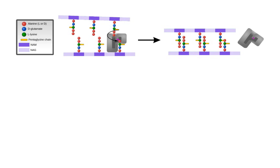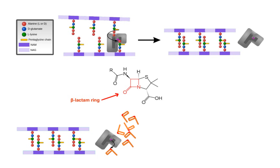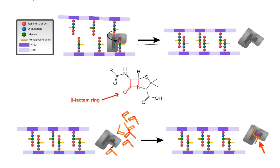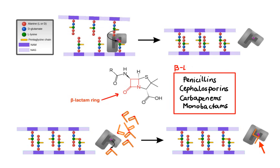In order for bacteria to grow and divide, a new cell wall must be continuously built. Most antibiotics in this group are characterized by a beta-lactam ring at the core of their structure, which resembles the substrate for penicillin-binding proteins. When a penicillin-binding protein binds to the beta-lactam ring, a covalent bond is formed, resulting in a permanently blocked active site. This makes the enzyme unable to perform its role in cell wall synthesis, leading to death of bacteria due to osmotic instability or autolysis. The beta-lactam ring is part of several antibiotic families: penicillins, cephalosporins, carbapenems, and monobactams — collectively called beta-lactam antibiotics.